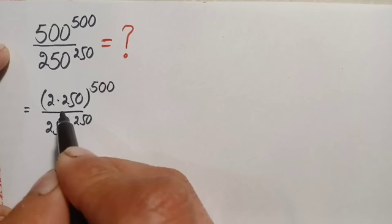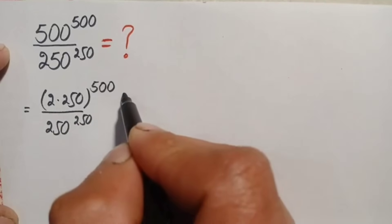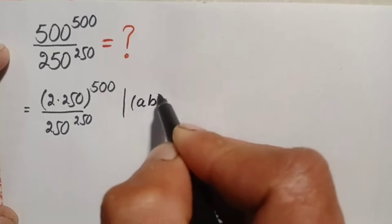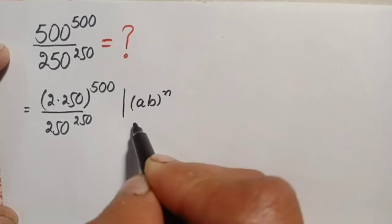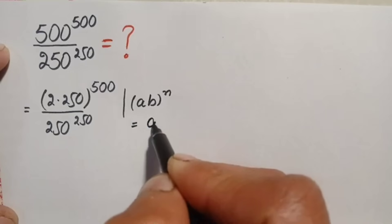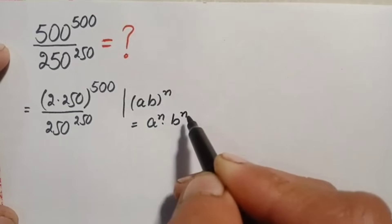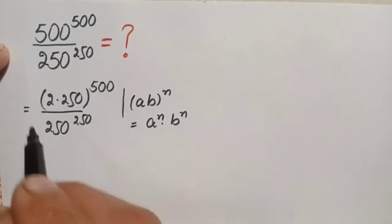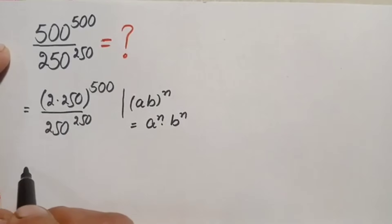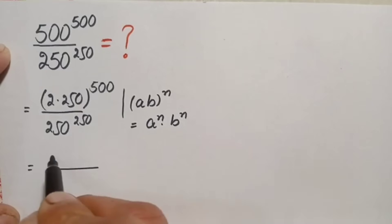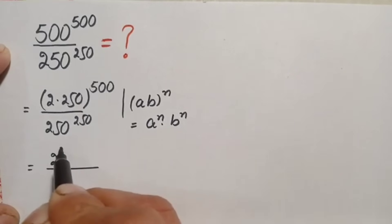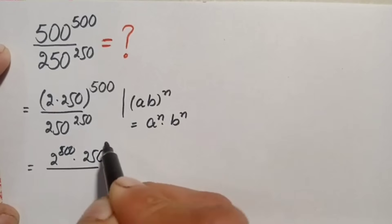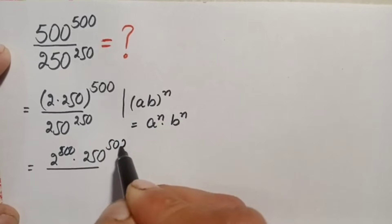Now here in the numerator we will use an exponential identity. The identity is: (a times b) raised to power n, which can also be written as a raised to power n times b raised to power n. So using this identity, we will spread this power over 2 and 250, so the numerator will become 2 raised to power 500 times 250 raised to power 500.